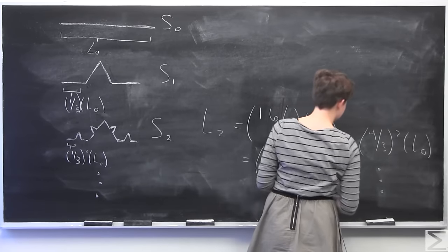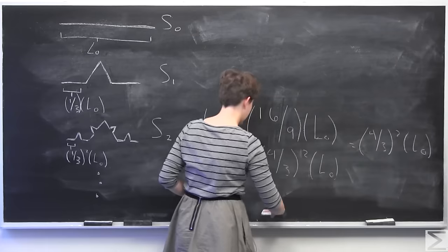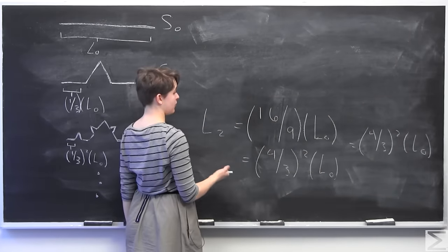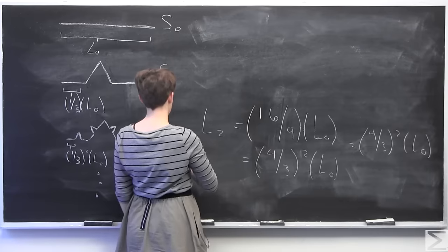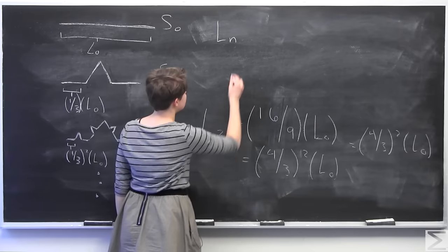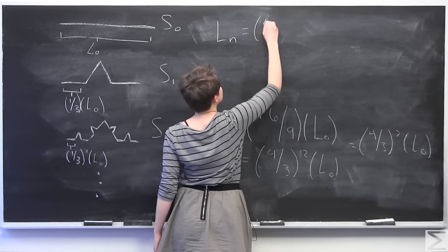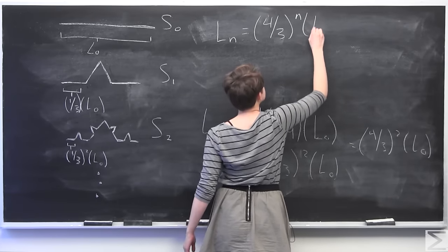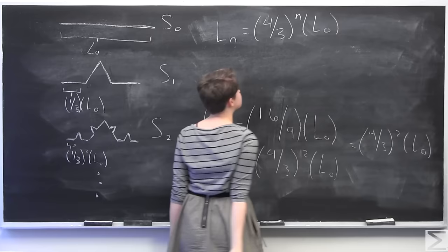The curve that we're trying to look at iterates out until infinity. So we want to have a general formula for the length of the nth iteration. So we can deduce from looking at this that the length of the nth iteration is going to be 4 thirds to the n times L0, which is the length of our starting one.